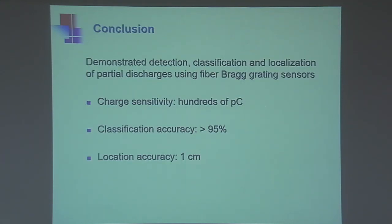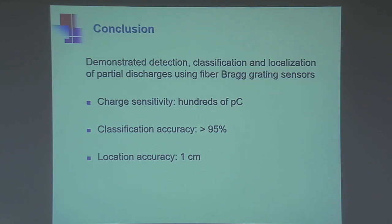To conclude, we have demonstrated detection, classification, and localization of partial discharges in power transformers using fiber Bragg grating-based sensors. We have obtained a charge sensitivity of the order of hundreds of picocoulombs, a classification accuracy of more than 95 percent, and a location accuracy of the order of a centimeter. In short, we have proved that fiber Bragg gratings are tangible solutions for condition monitoring of power transformers.